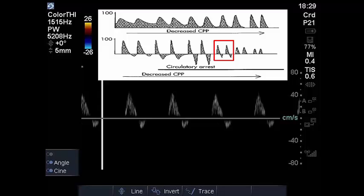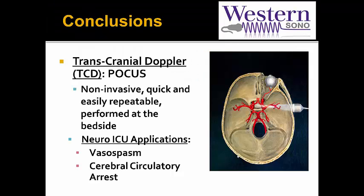This was impending cerebral circulatory arrest in keeping with brain death. An ancillary test was later sought after when the patient was more hemodynamically stable, and it was in keeping with our previous TCD findings — confirming the patient had brain death. In conclusion, transcranial Doppler is a good point-of-care ultrasound application: non-invasive, quick, and easily repeatable, performed at the bedside through the transtemporal window looking at the MCA. The neuro applications taught here are primarily for vasospasm post-subarachnoid hemorrhage and cerebral circulatory arrest, though other applications and indications are available.